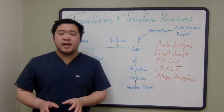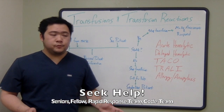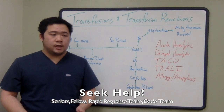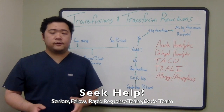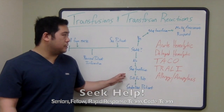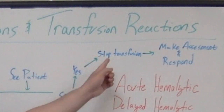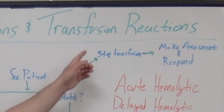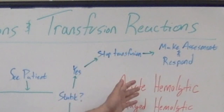The people I can ask for help overnight are any seniors who might be in-house overnight, any ICU fellows or attendants who could be in-house. And if I'm very acutely worried about them, I always feel comfortable calling for MRT or for a code if this patient is acutely decompensating. If the patient is stable, I still consider stopping the transfusion in an effort to control the variables so that I can make an assessment and respond to my patient.